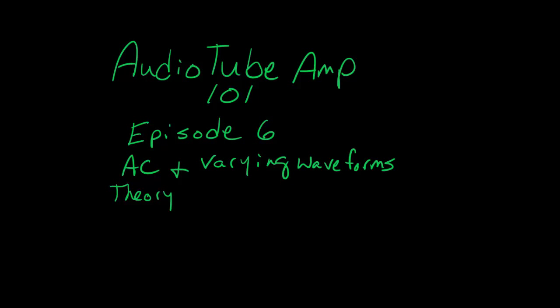Welcome back everybody — another exciting video in our audio tube amplifier 101 series. This is episode six and we're going to focus today on AC theory and varying waveforms. AC or alternating current theory is fairly difficult to teach without some graphical representation, and I'm not an expert at creating computer-animated graphics, so I'm going to leverage some work from other people on YouTube.